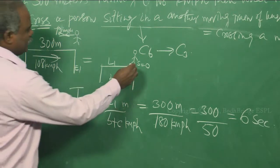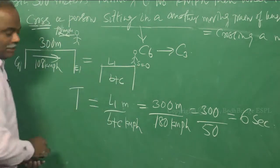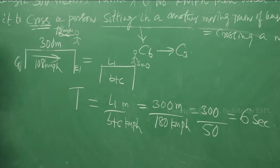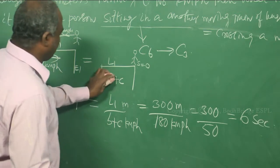So here the speed of the person is 0 and the speed of the train is now 108 plus 72, right?